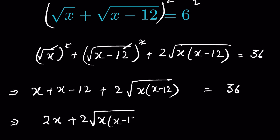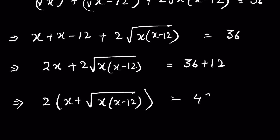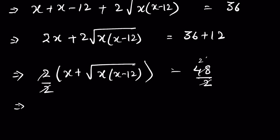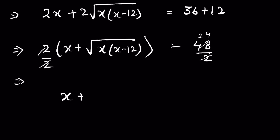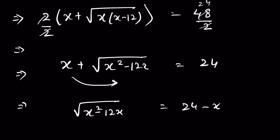Sending minus 12 to the right hand side gives 36 plus 12, which is 48. Taking 2 as common: 2 times square root of x times x minus 12 equals 48, so square root of x times x minus 12 equals 24. Squaring both sides and expanding: x squared minus 12x equals 576 minus 48x plus x squared.